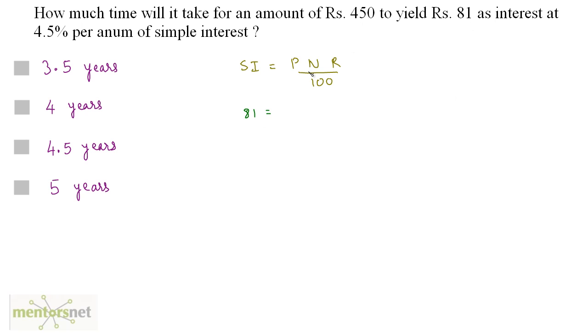It is equal to the principal, which is 450. The number of years is what has been asked, so let it be N times the rate, which is 4.5. So 4.5 by 100. This zero gets cancelled out. We have 45 times N times, let us make this 45. So 45 by 10 times 10 to remove the decimal point.